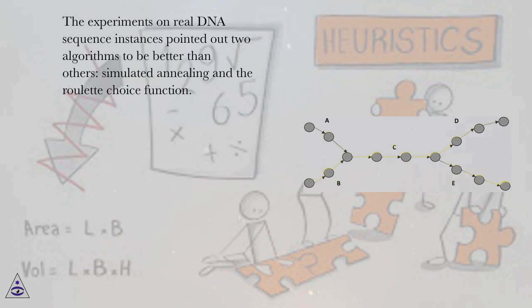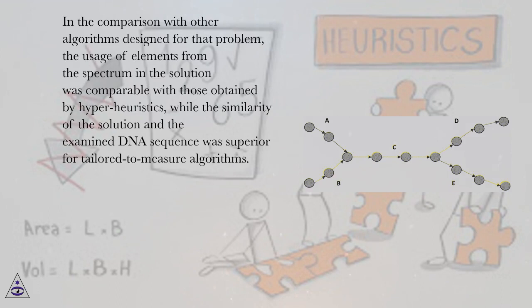In the comparison with other algorithms designed for that problem, the usage of elements from the spectrum in the solution was comparable with those obtained by hyper-heuristics, while the similarity of the solution and the examined DNA sequence was superior for tailored-to-measure algorithms.